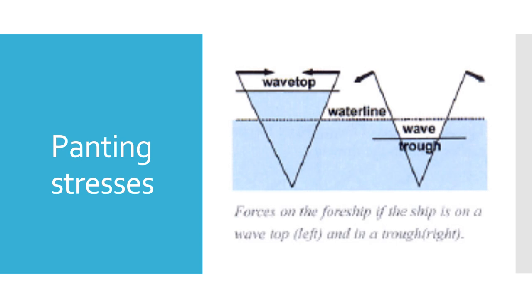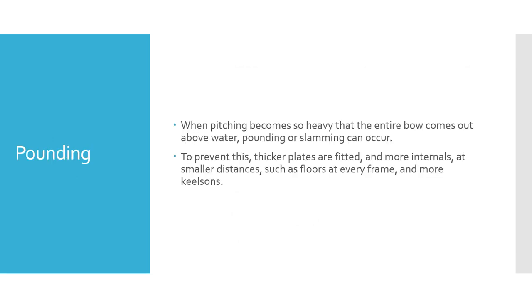To reduce the panting stress effect, panting beams in the transverse direction and stringers against the ship's shell are added to the fore peak area and also the aft peak structure to strengthen it. Pounding occurs when pitching becomes so heavy that the entire bow comes above the water and then slams down. Especially with a flat fore-body shape such as in bulk carriers and tankers, the dynamic forces on the flat bottom when it beats the sea surface can result in damage to plating and internals. To prevent this, thicker plates are fitted and more internals are placed at smaller distances, such as floors at every frame and more keelsons.